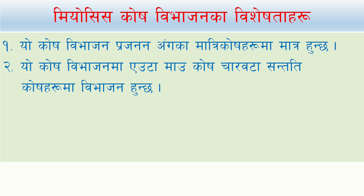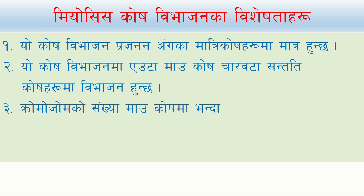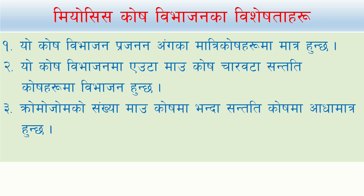In the meiosis, the chromosome number is 4n to 1n. In the chromosome, the meiosis gives 1n. In meiosis, a reductional cell division is made.